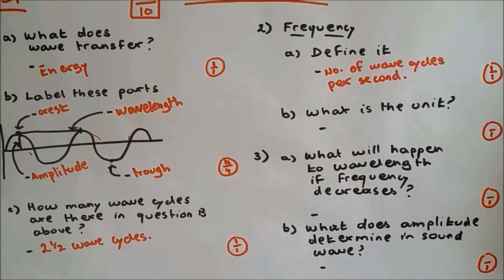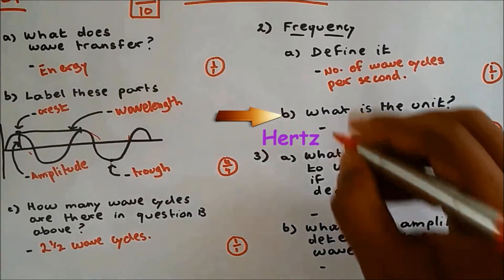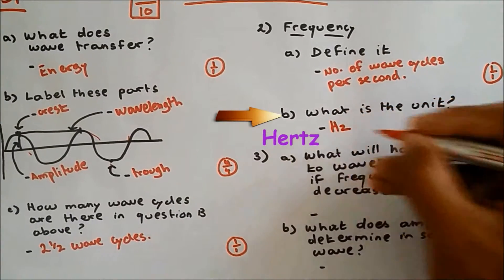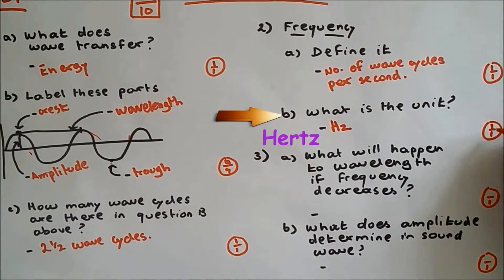2b. What is the unit of frequency? The unit of frequency is hertz, which is Hz. One out of one.